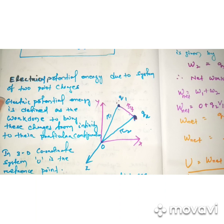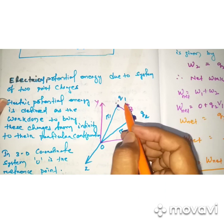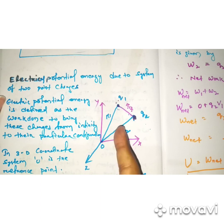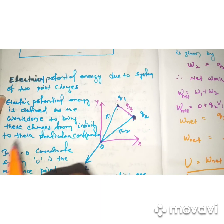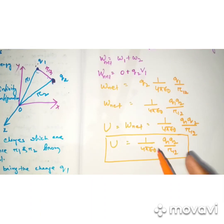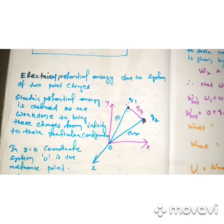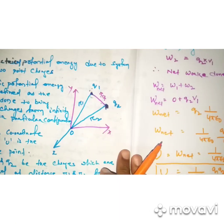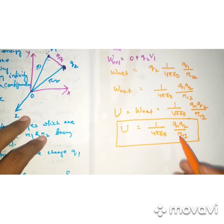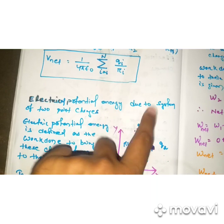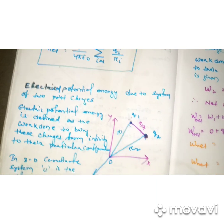So this is the potential energy due to the system of two point charges, represented as U equal to 1 by 4 pi epsilon-naught times Q1 Q2 by R12. For similar nature charges — positive-positive or negative-negative — the potential energy is positive. That is all about electrical potential energy due to a system of two point charges. Thank you.